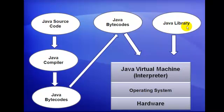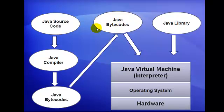We have added the Java library here because within our source code we may have referenced the Java library. At that time it becomes essential to include this library along with the Java bytecodes, and both are forwarded to the Java Virtual Machine or interpreter. It is the Java Virtual Machine that converts them according to the operating system or platform, and your program gets executed.